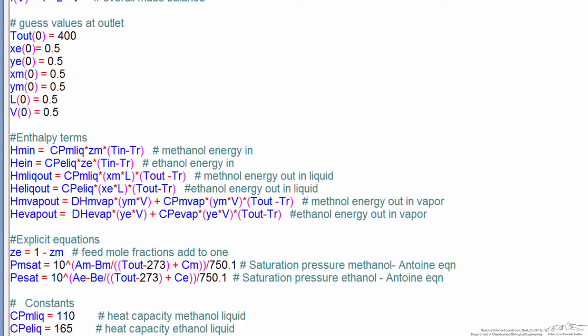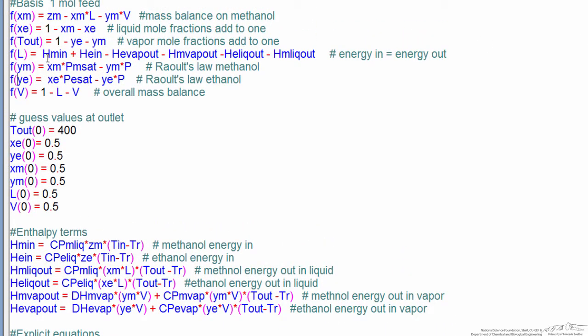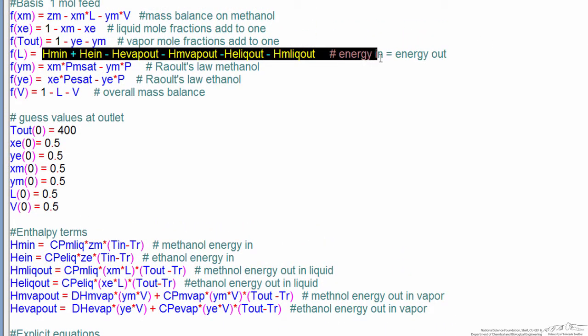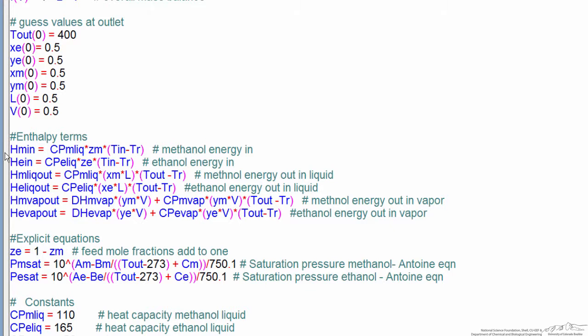And then next for the energy balance, the energy balance equation is here, energy in equals energy out. And the various terms are all enthalpies relative to a reference temperature, in this case we use 298 Kelvin.